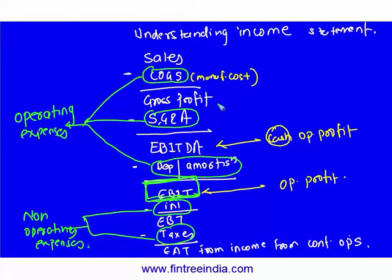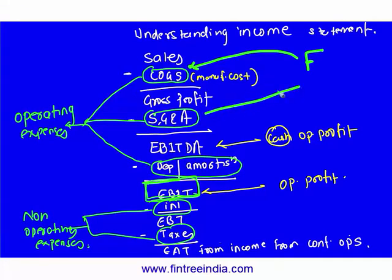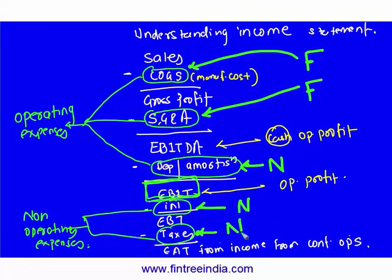Now this COGS classification of cost is called functional classification. SG&A classification of cost is also called functional classification. Depreciation is classified by nature. Interest is classification by nature, and taxes — classification by nature. This is a part of study session 7.